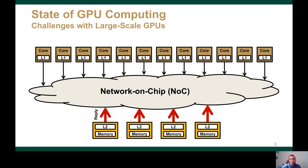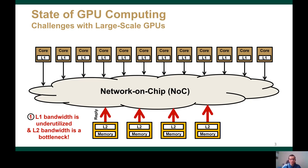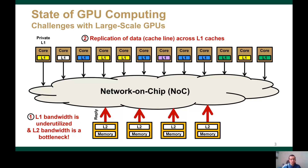which puts pressure on the reply bandwidth from the few L2 slices. Therefore, the on-chip L1 bandwidth is underutilized while the L2 bandwidth is bottlenecked. Also, due to the private nature of these many cores, each core can independently request data from the L2 while being oblivious to other cores' state, and this leads to data replication across the cores' L1 caches.